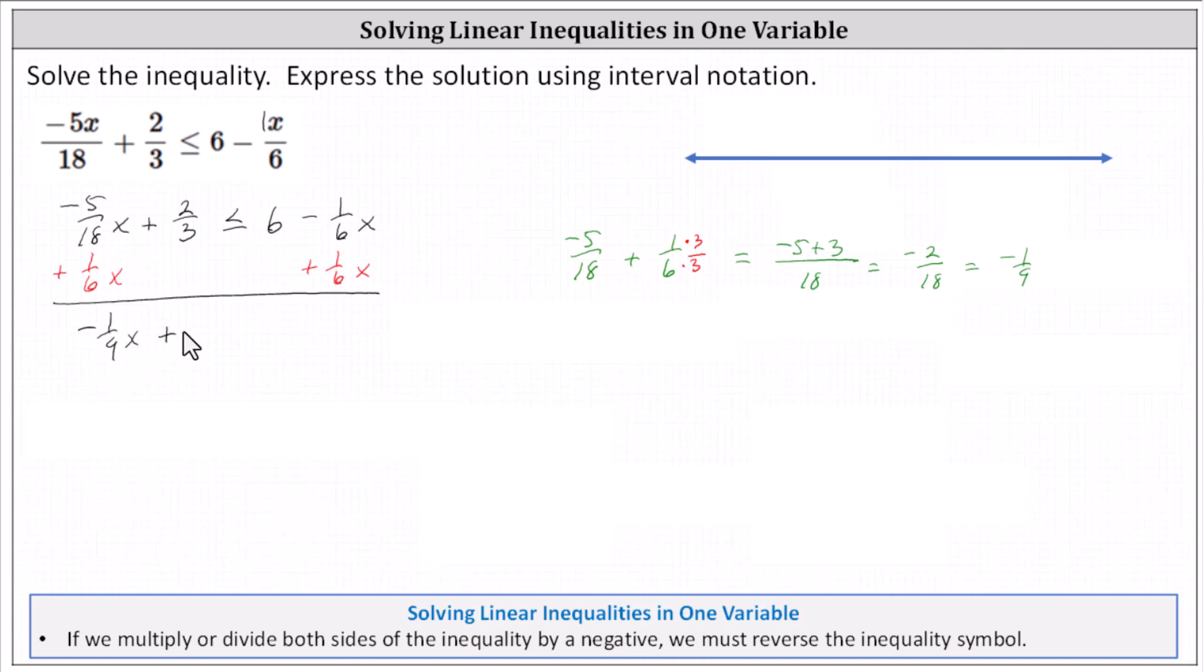Of course, we still have + 2/3, less than or equal to. On the right, we have 6. And now we'll isolate the variable term by subtracting 2/3 on both sides.